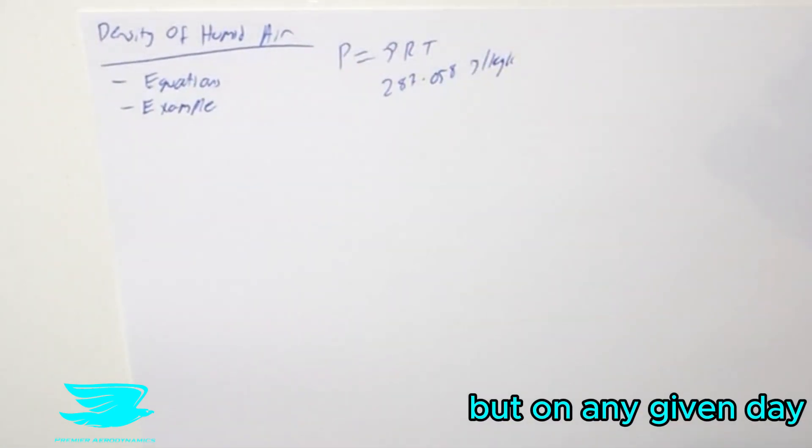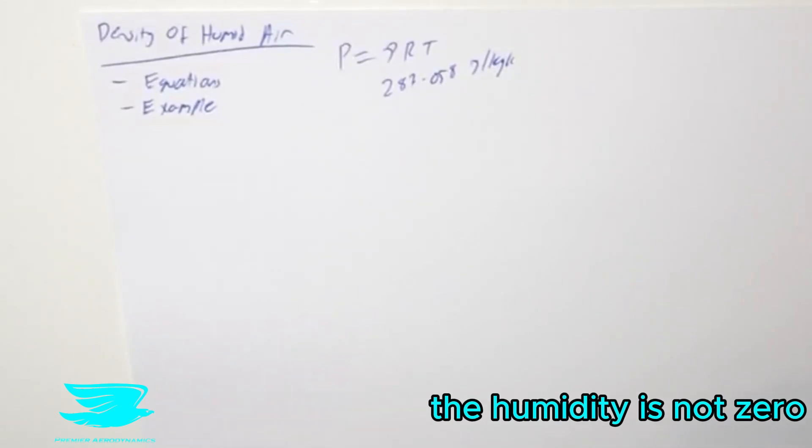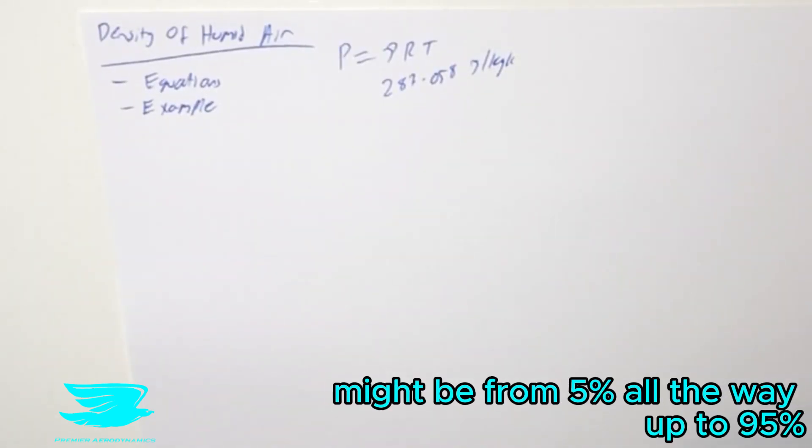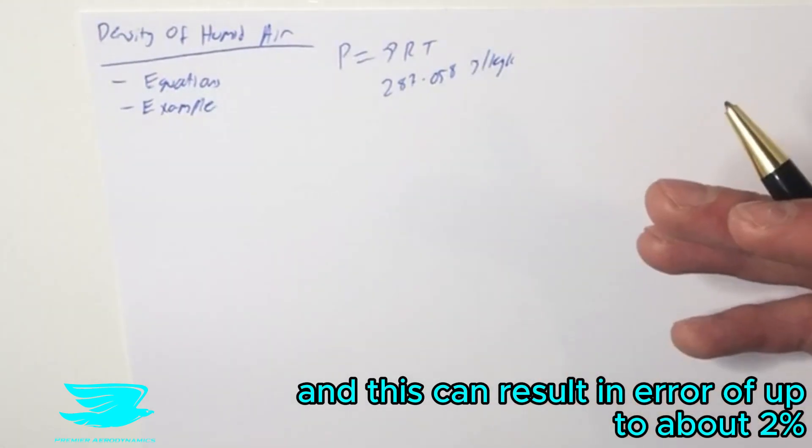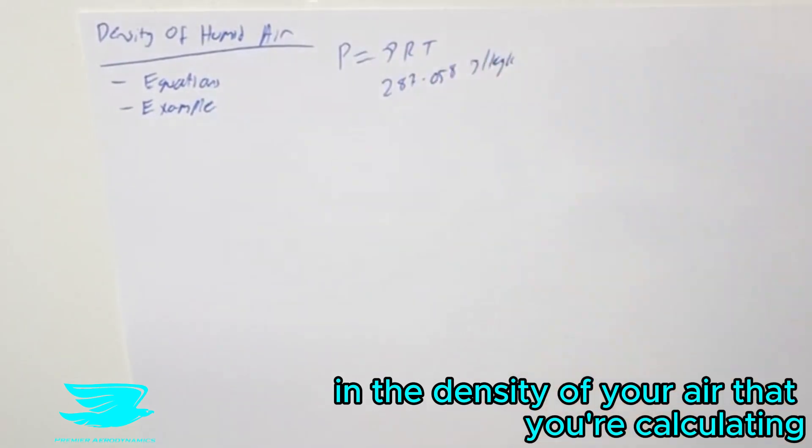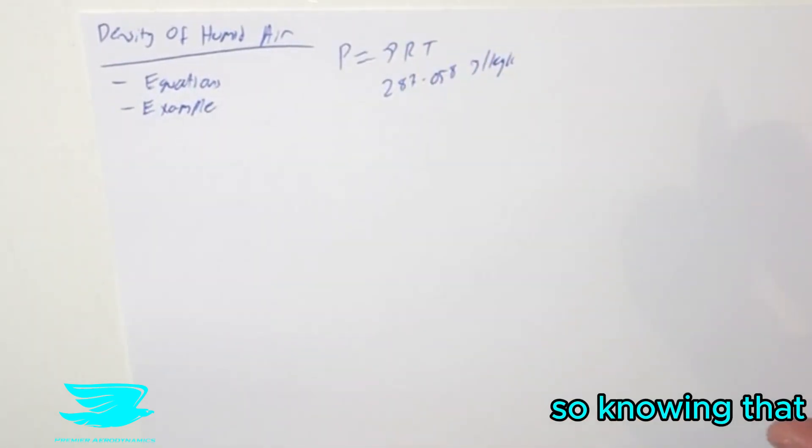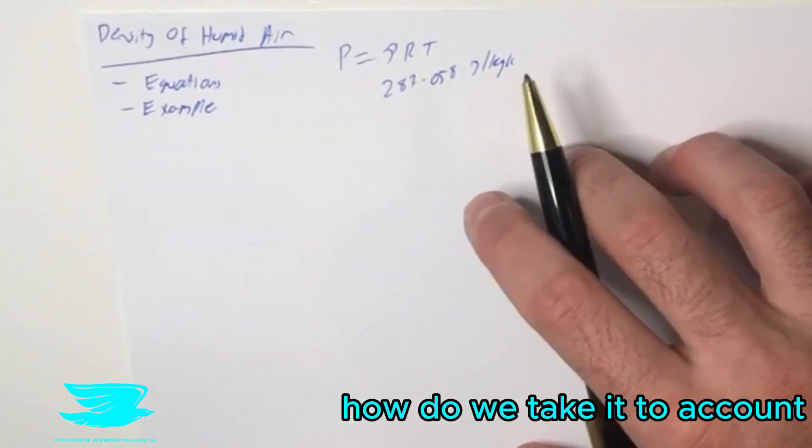But on any given day, the humidity is not zero, and depending on where you are, it might be ranging from 5% all the way up to 95%. This can result in an error of up to about 2% in the density of your air that you're calculating. So how do we take into account the humidity?